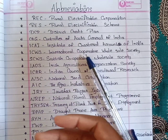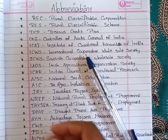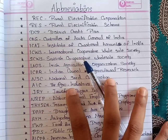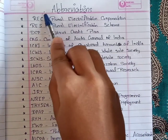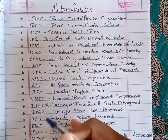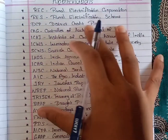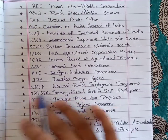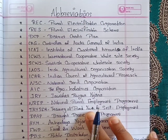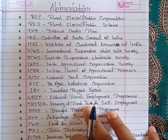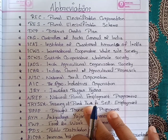Additional important abbreviations for the CACB exam include: AICC, AICRC, NDDB, NCCCF, NCCFA, NCDC, NCCT, and others. These will be covered in the class and may appear as questions in the exam.